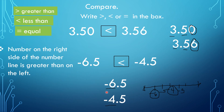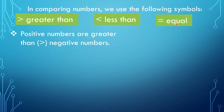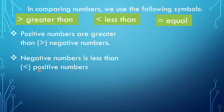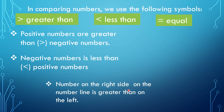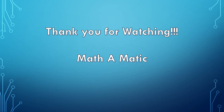Don't forget: in comparing numbers, we use the symbols greater than, less than, or equal. Positive numbers are greater than negative numbers. Negative numbers are less than positive numbers. The number on the right side of the number line is greater than the one on the left. That's all for this video. Thank you for watching — see you on the next one. Bye!